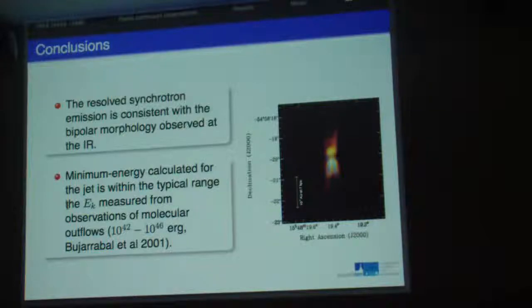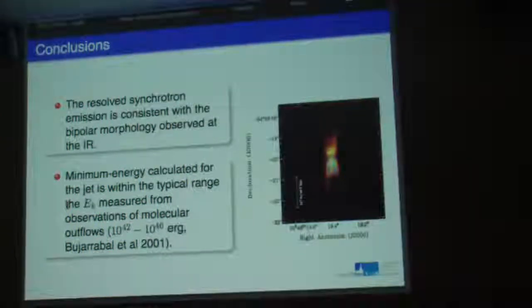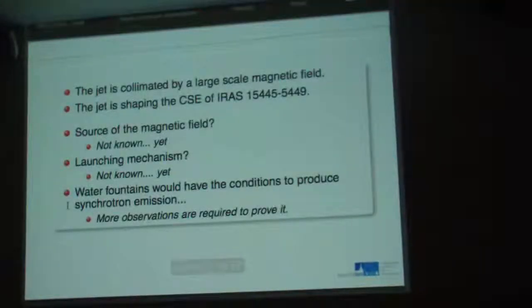We have that the synchrotron emission that we detected correlates very well with the infrared emission detected by Lagadec. The calculation that we did of the minimum energy assuming energy equipartition is within the kinetic energy range measured using observations of the molecular component of the outflow. We suggest that the jet is collimated by a large-scale magnetic field and the jet is shaping the circumstellar envelope of the source, but we still don't know the source of the magnetic field or the launching mechanism. Since the source is a water fountain, we think we have to start observing this source in order to see if synchrotron emission is a common phenomenon or only in this particular source. Thank you very much.